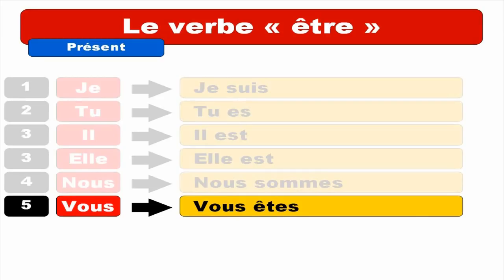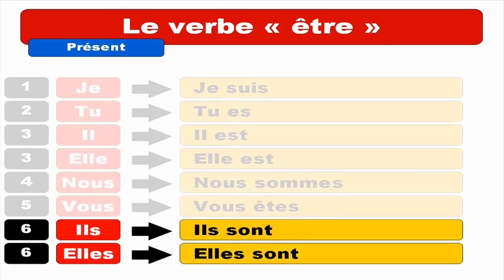Final S not pronounced. And then ILS and ELLES — ILS SONT. Repeat. ILS SONT. And then the feminine form — ELLES SONT. Repeat. ELLES SONT.